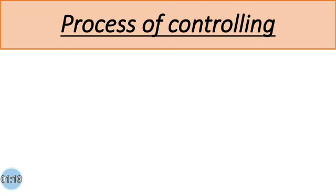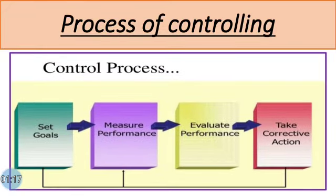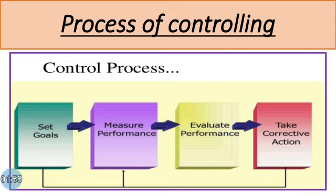The whole controlling process is based on this chart, which is called the process of controlling. Here four stages are given. The first stage is 'set goals,' also called standard performance, which means the organization or managers are setting some goals to be performed in future. The second stage is 'measure performance,' also called actual performance, where the organization will see whatever they have achieved versus what they desired.